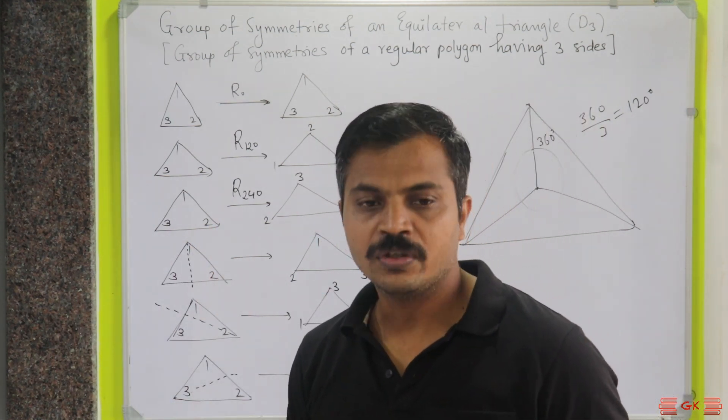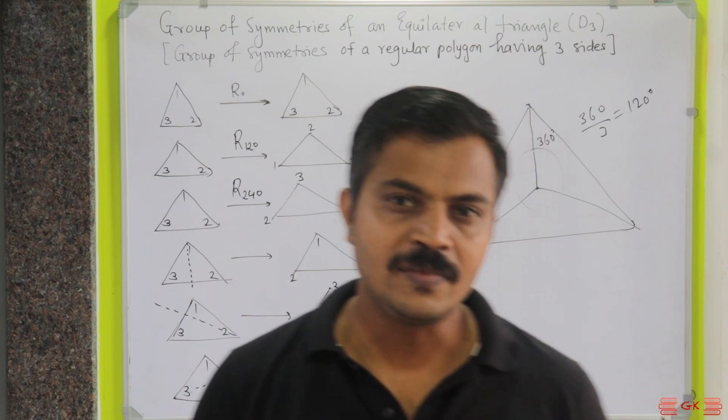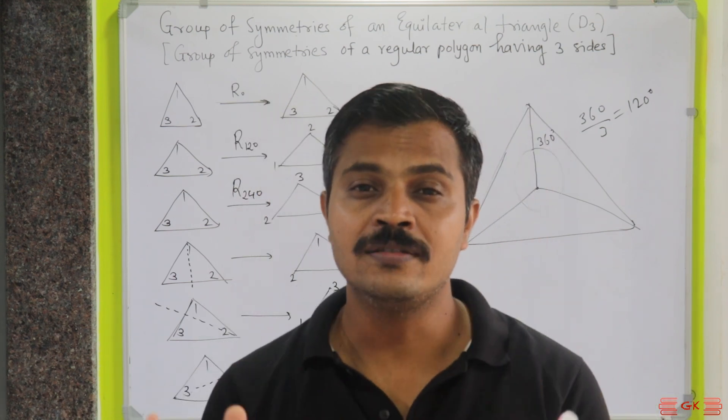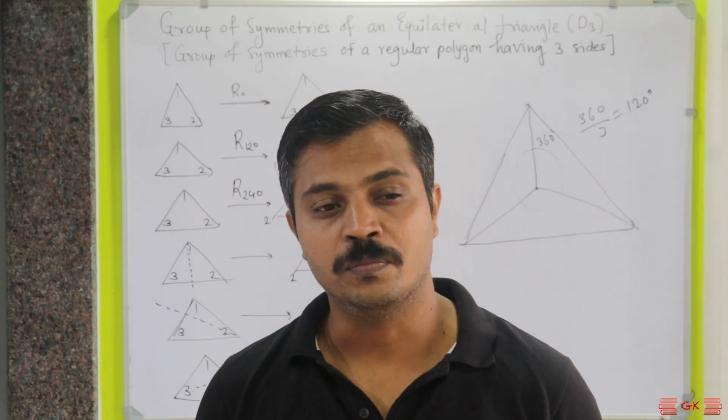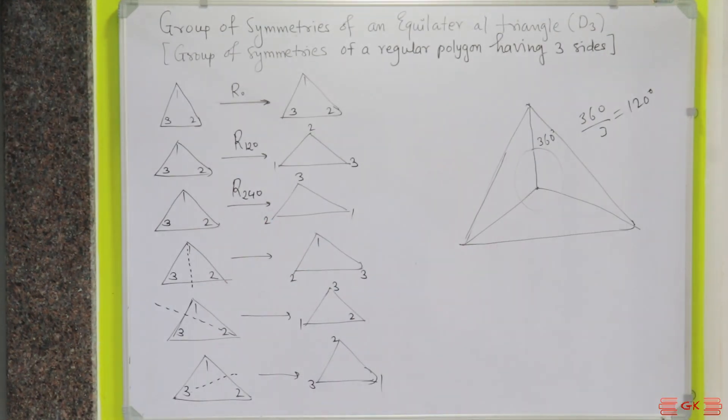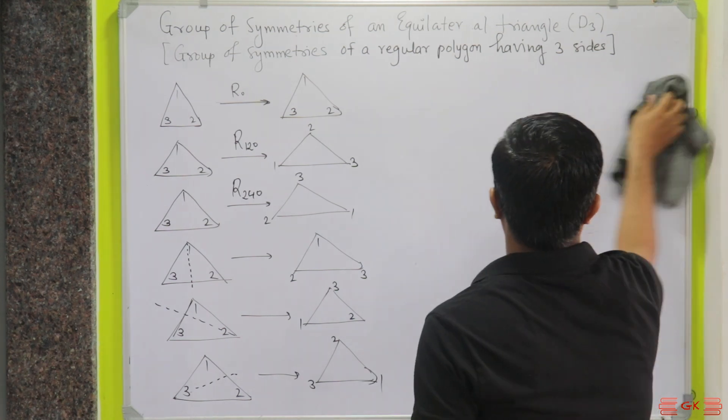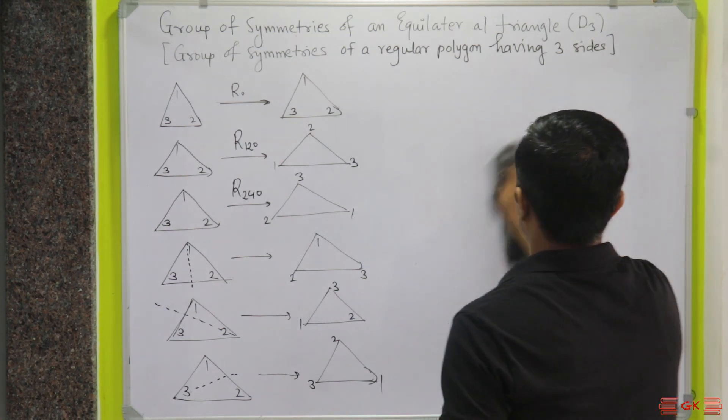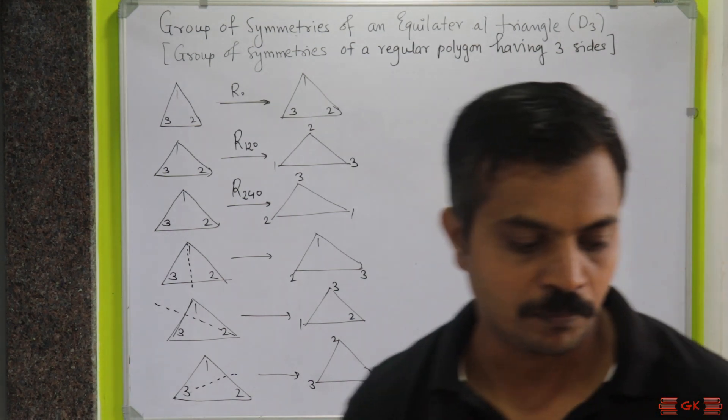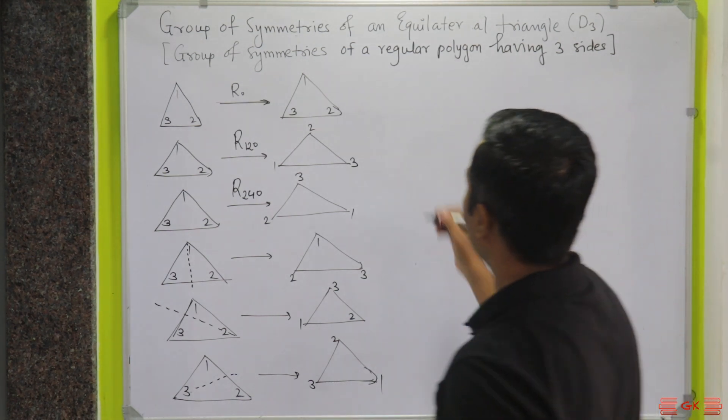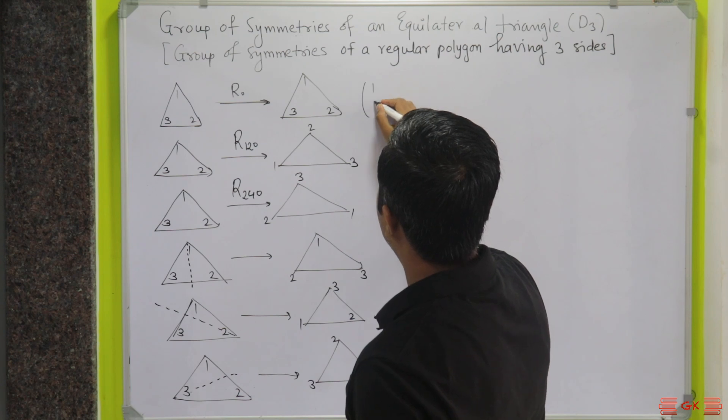Now, here, what we are going to do is take the help of permutations in order to prove that it is a group. So, corresponding to each symmetry now, we are going to write down a permutation. We will write that permutation in cyclic form. First of all, here, one maps to one.